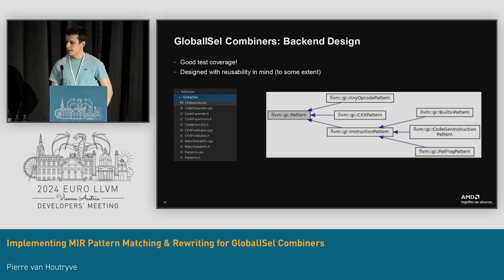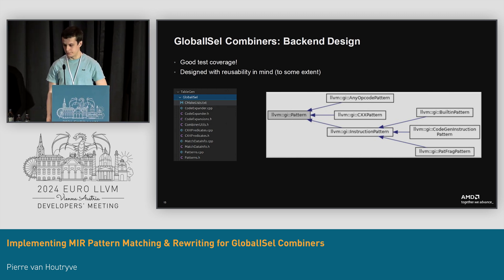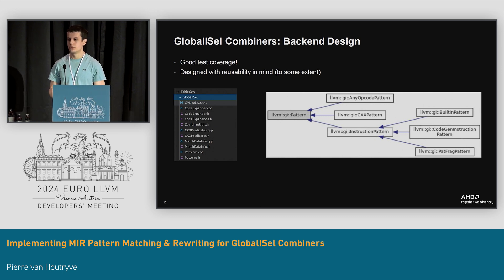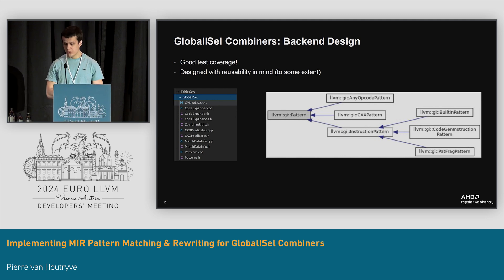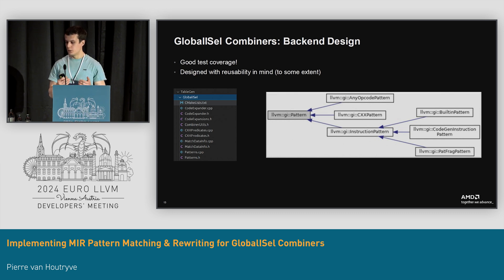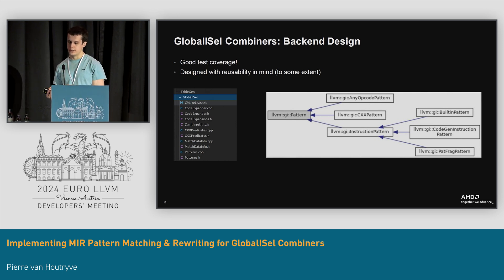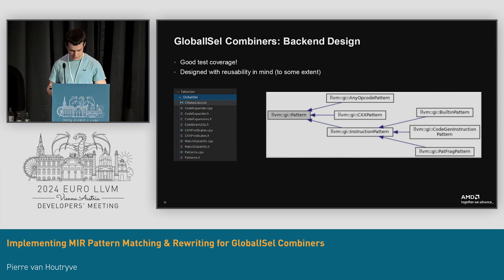I also aimed for good test coverage. It's never perfect, but I tried to test every non-trivial code path — and even trivial ones — so that if you want to contribute to the backend, you immediately see the implications of your change. I also designed the backend with reusability in mind: all the pattern parsing logic is completely separate from the backend, which I hope will enable experimentation with either new backends or integrating MIR patterns into existing backends.